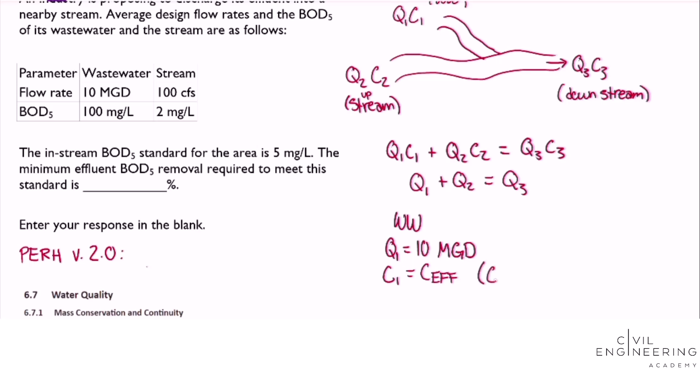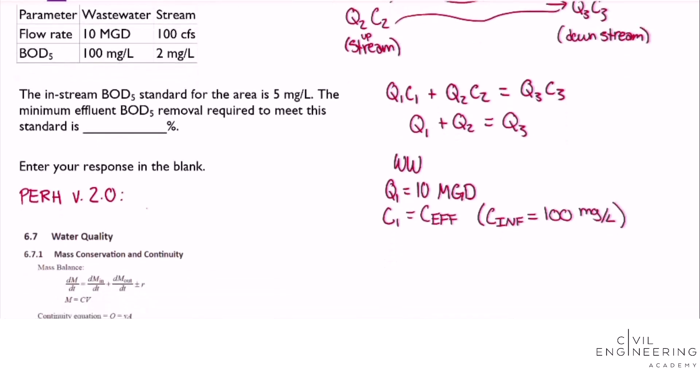As a side note we know that the influent to the wastewater treatment plant is that 100 milligrams per liter. We want to find what's coming out of the treatment plant to accomplish this 5 milligrams per liter goal as the C3.